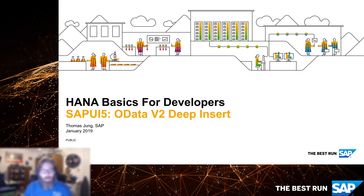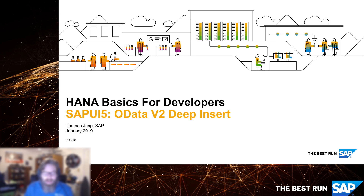Welcome back to HANA basics for developers. In our previous video we saw how we could use a batch operation to insert more than one record through a single OData call to the server. We want to build on that concept and talk about something called a deep insert — a specialized operation where you want to insert more than one record at a time, but they have a relationship to one another.